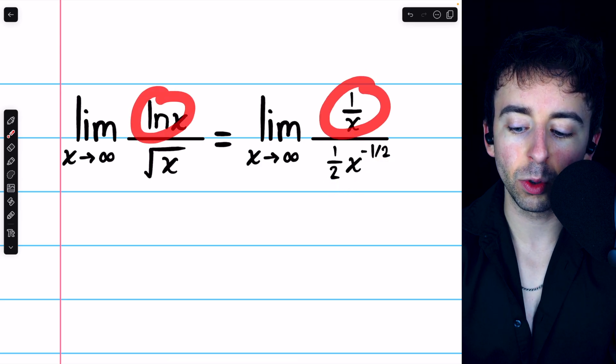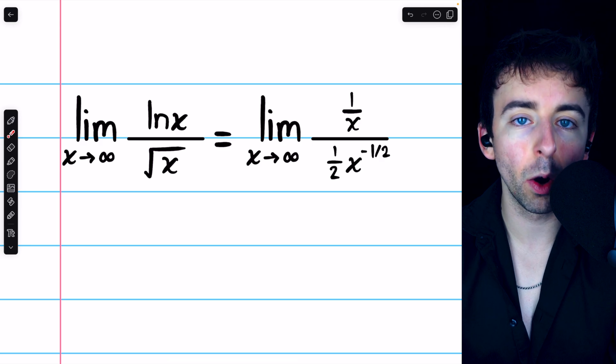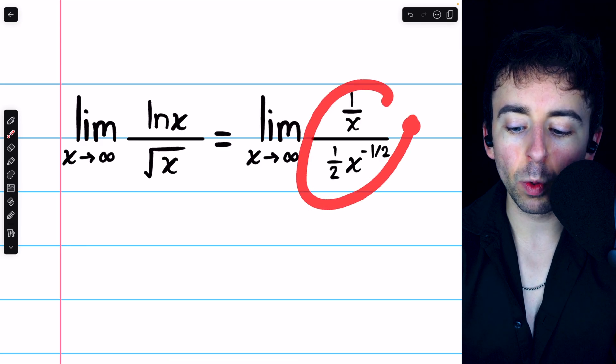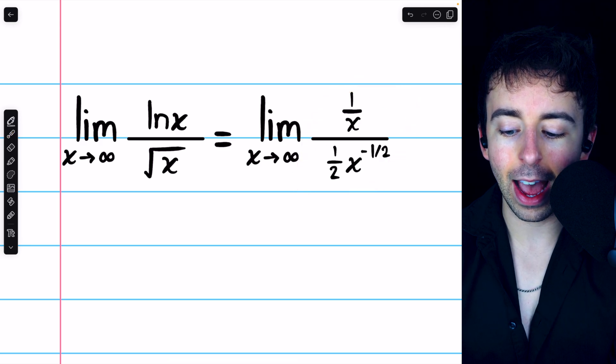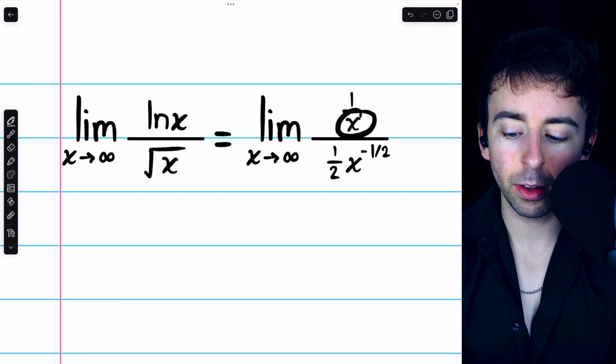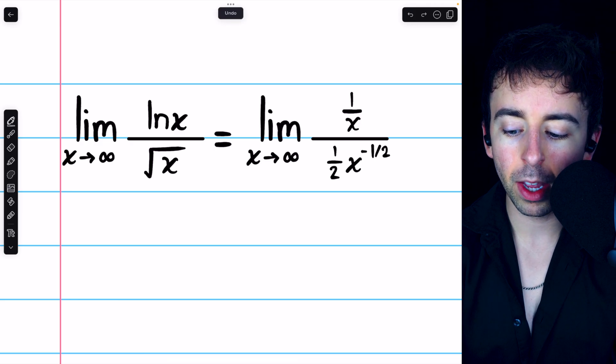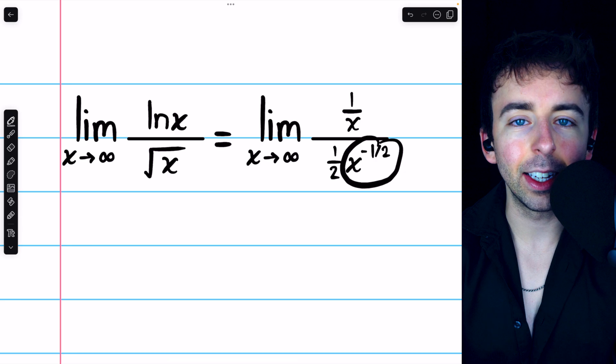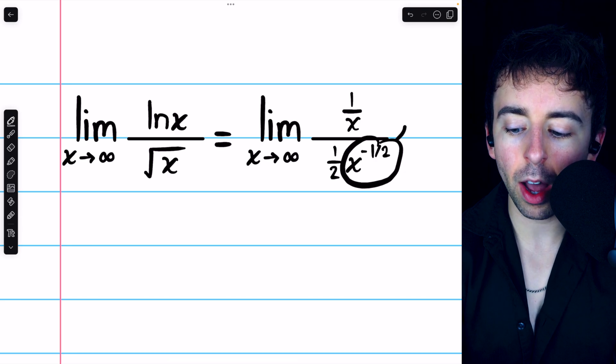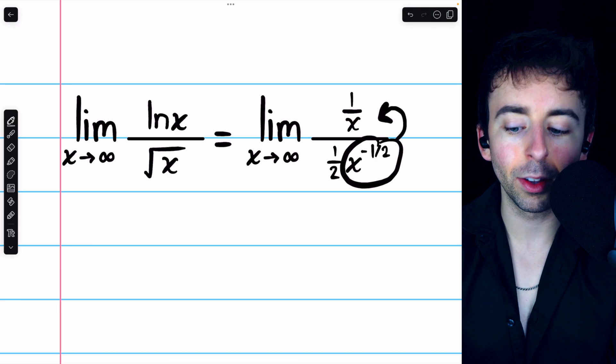Again, the derivative of ln x, which we have in the numerator, is 1 over x. Now, we can rewrite this a bit. Since this x is being divided by, we can move it to the denominator, and this x has a negative power, so we can give it a positive power if we move it to the numerator.